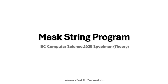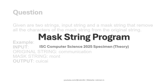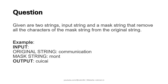Hello and welcome. In today's class, we will be solving the first program from the ISC Computer Science 2025 specimen paper, the theory paper. According to this question, given are two strings — an input string and a mask string — that remove all the characters of the mask string from the original string. Let's try to understand this with an example.